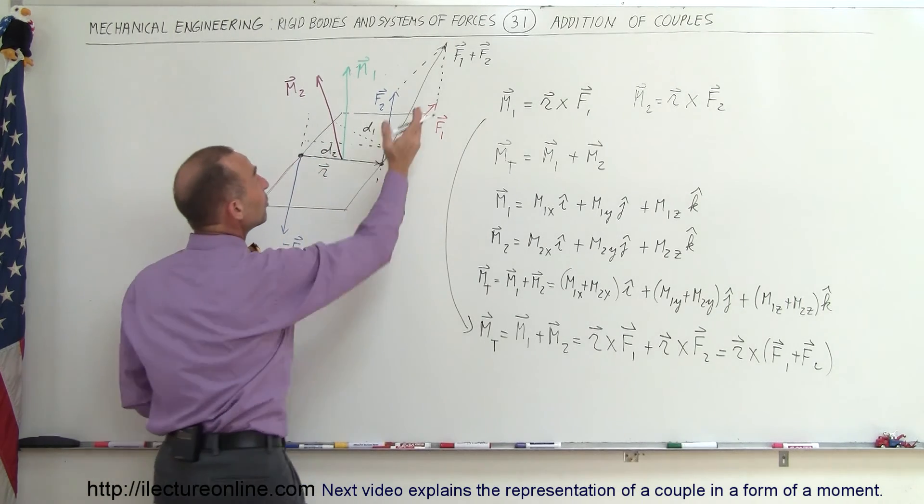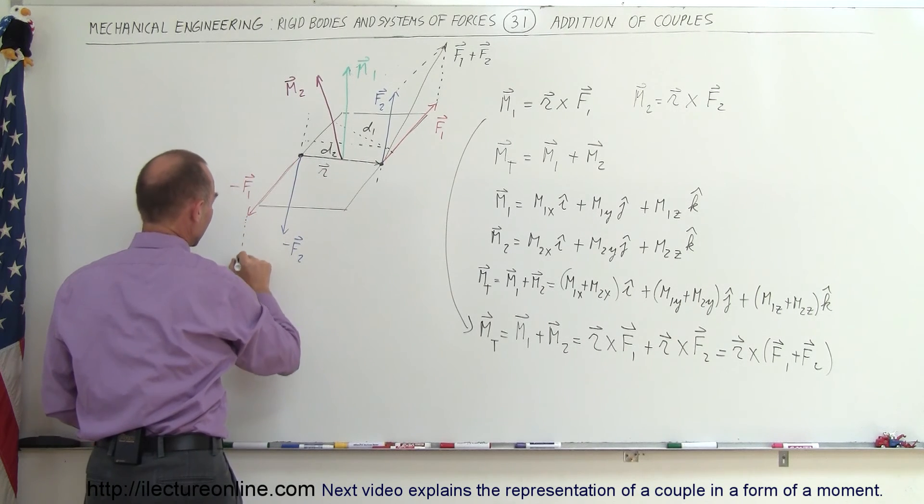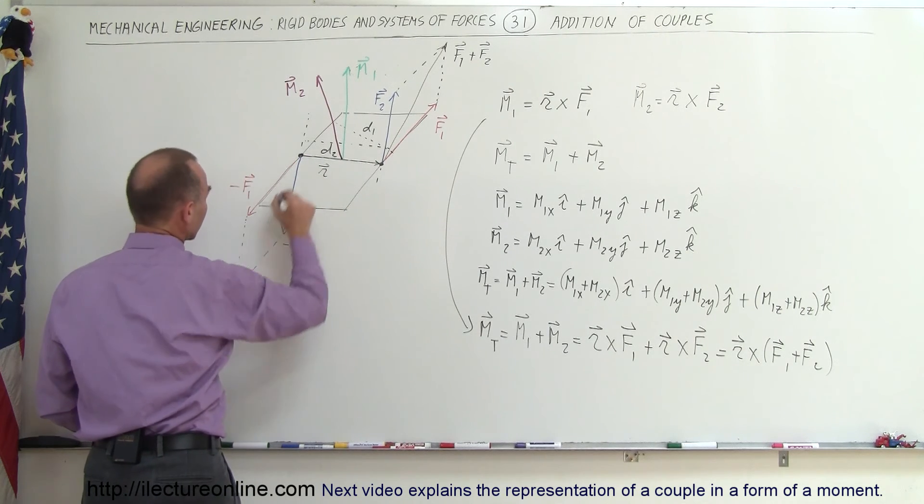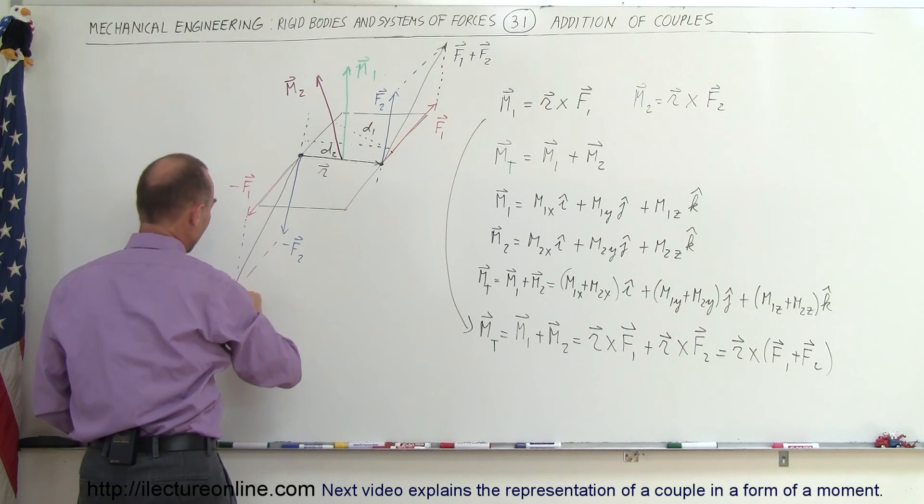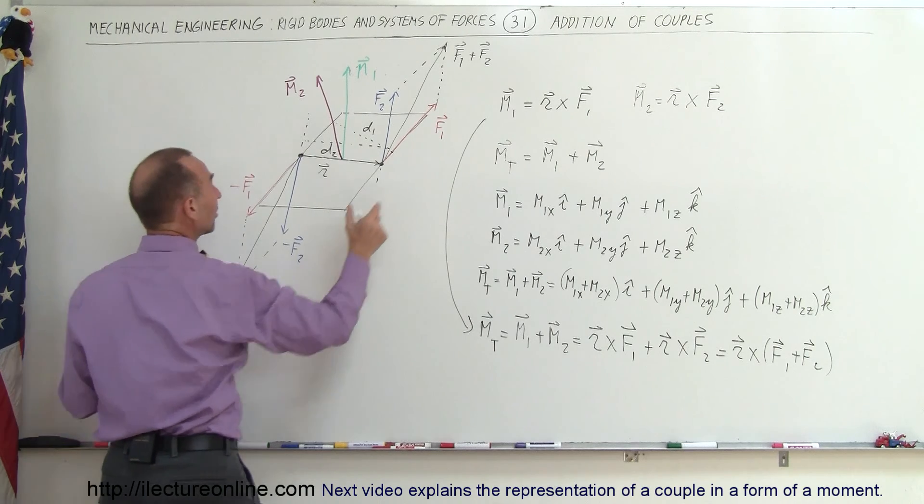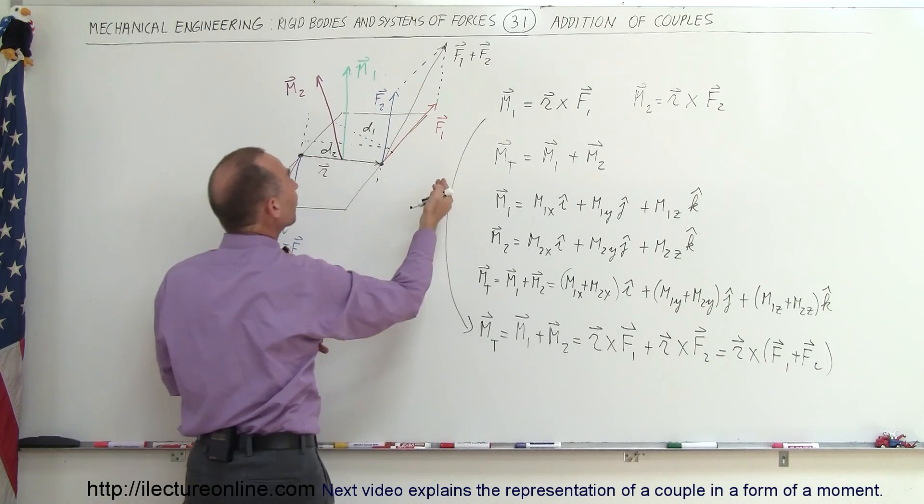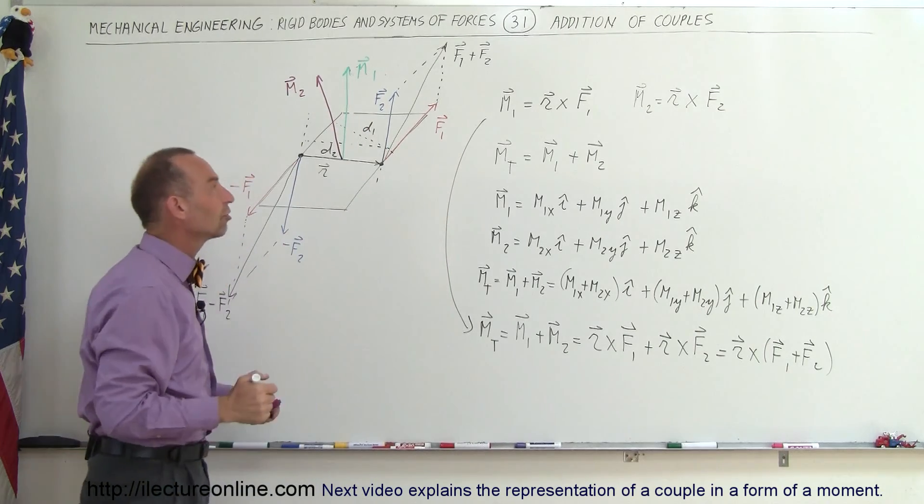and then if we simply use that vector as driving the couple, that's not the right way to say it, then if we use this vector, and then, of course, the negative vector on the other side, so this here would be the negative F1 minus F2, so then you can say that these two sums then form a new couple, which then forms the sum of the two original couples.